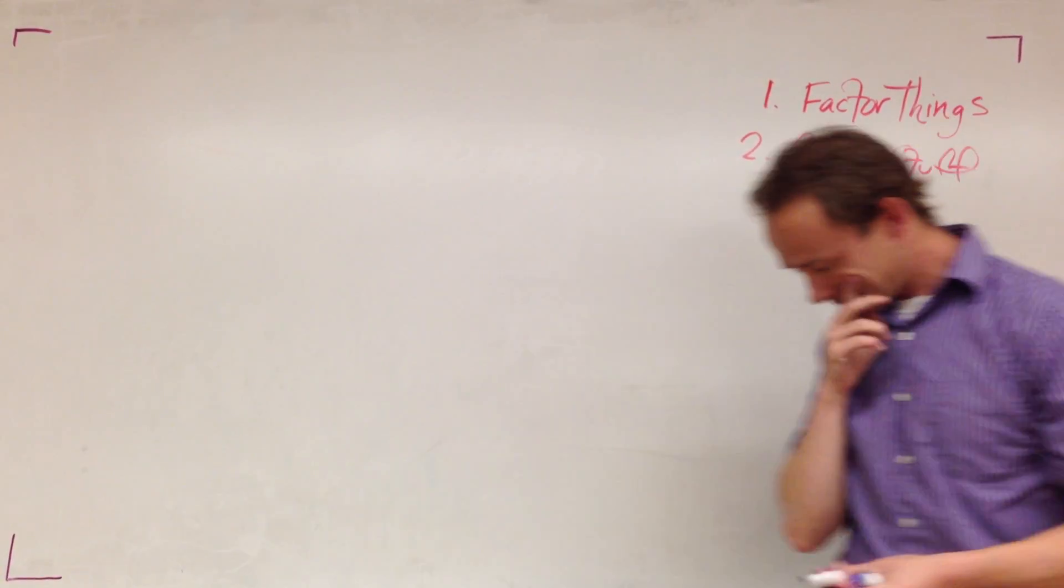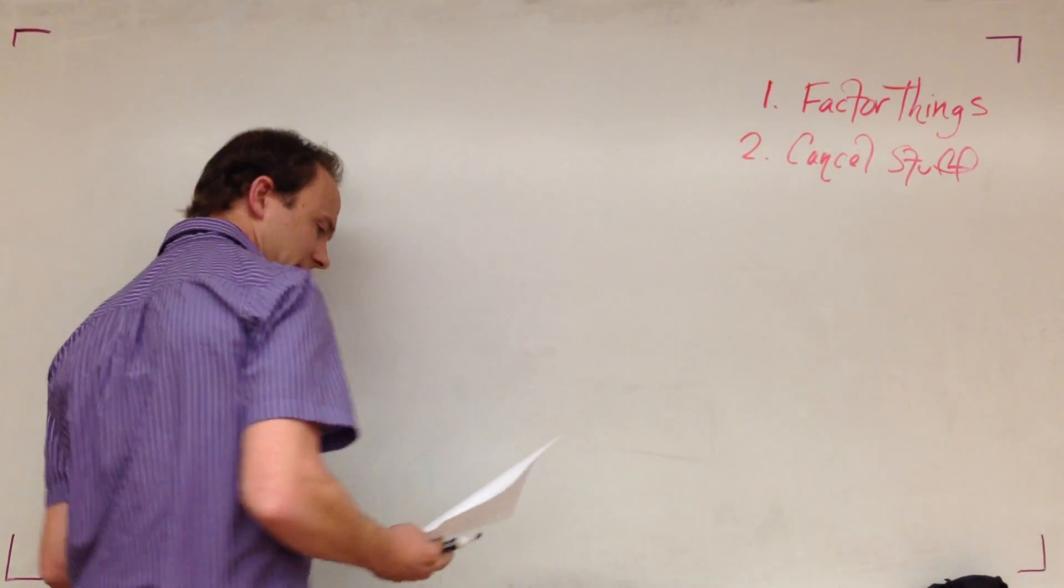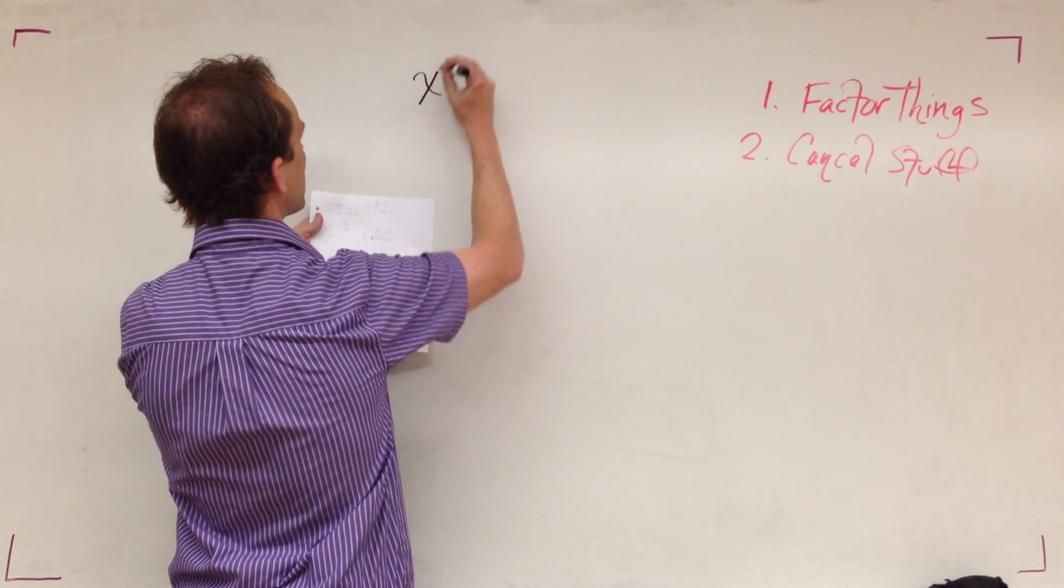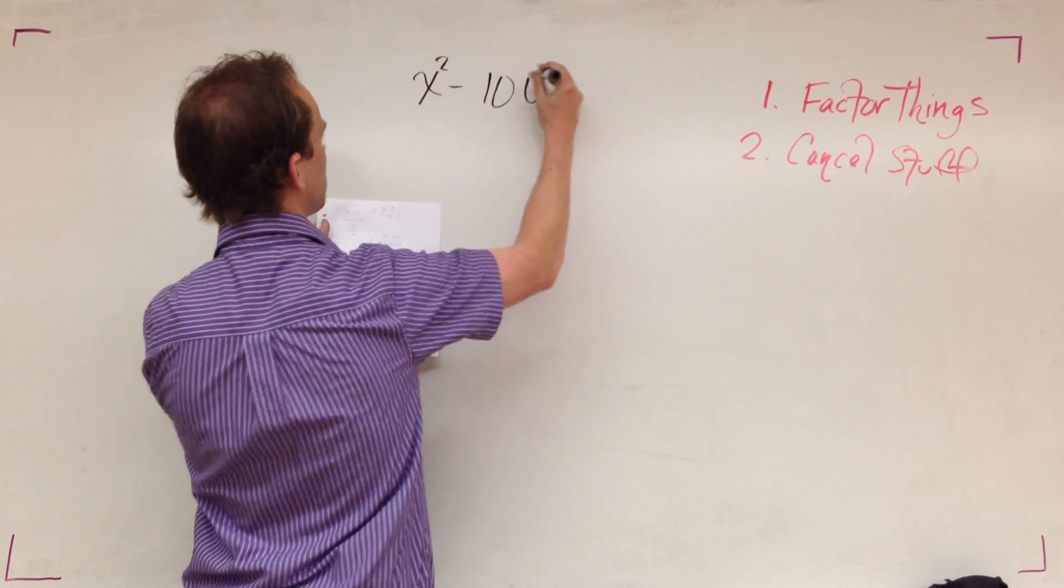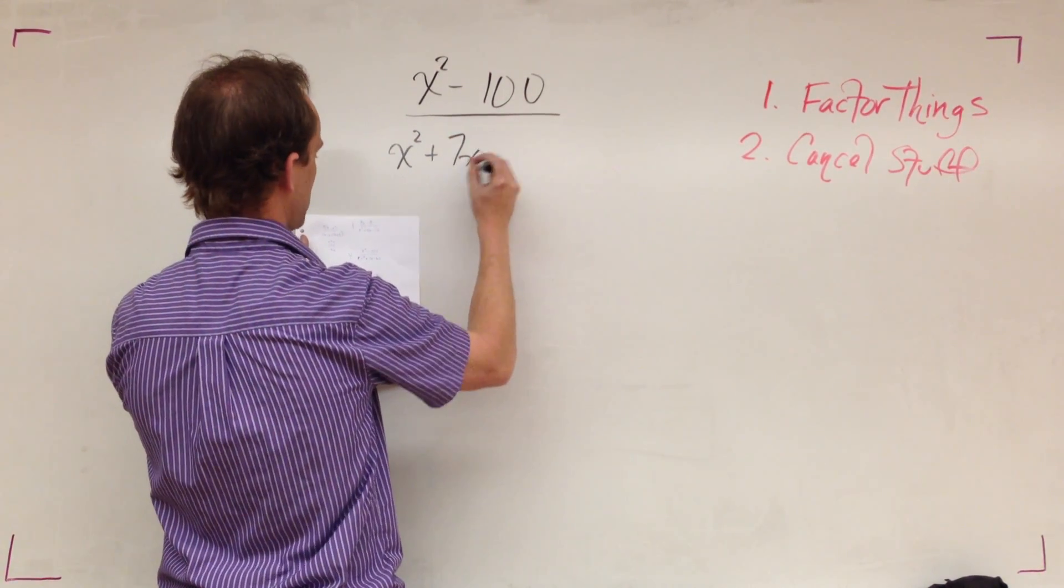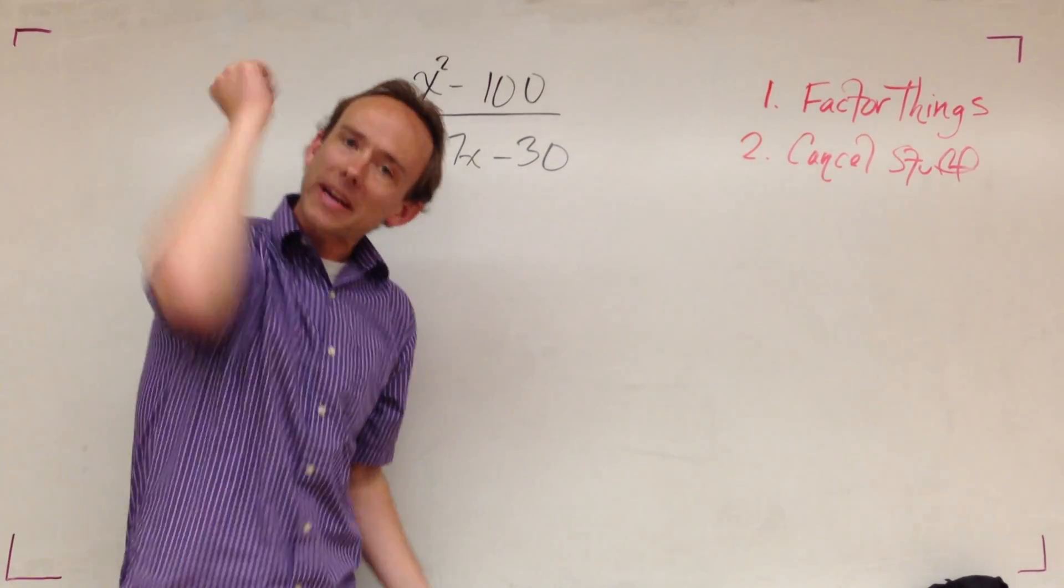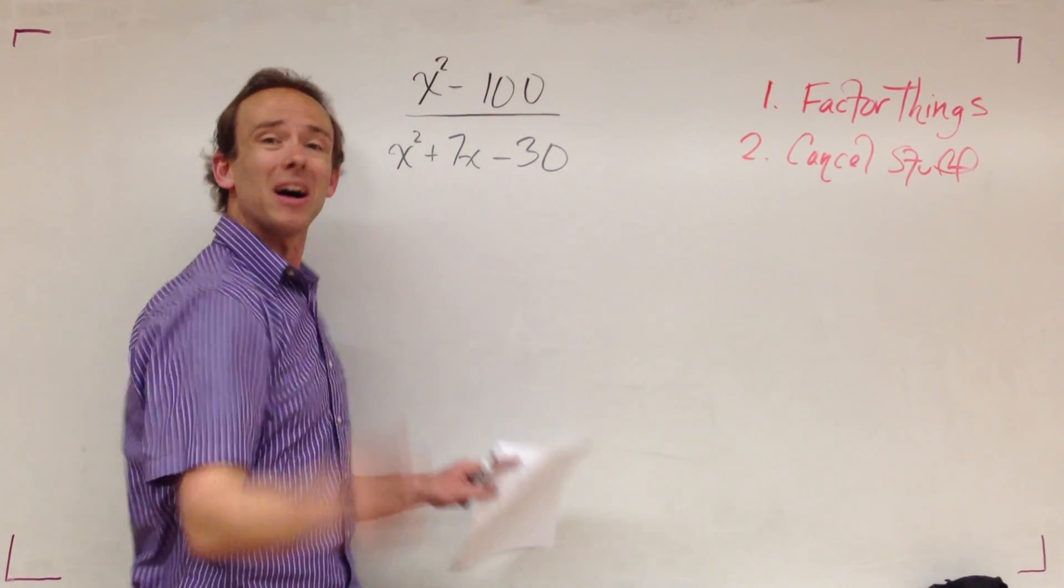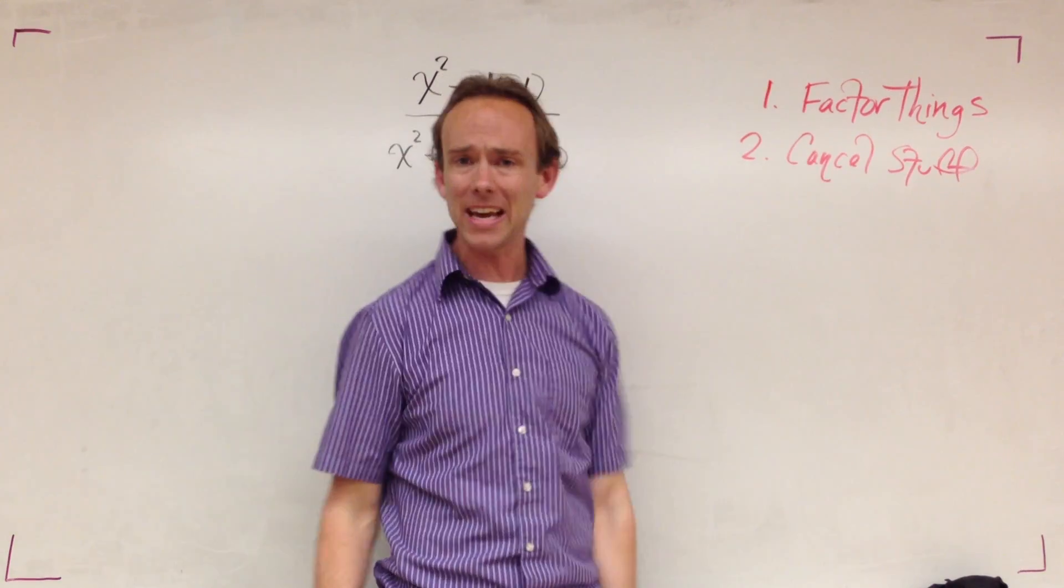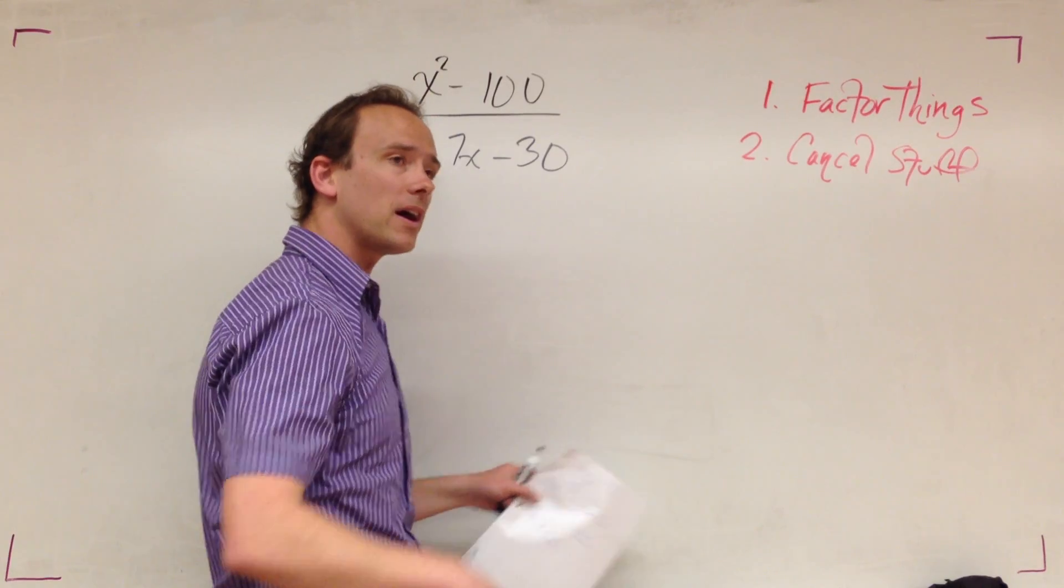I'm intentionally not looking for excluded values, maybe we'll do that some other time. Right now I'm interested in just the simplification process. What do we got here? We got x squared minus 100 over x squared plus 7x minus 30. I urge you, I recommend to you that you pause this video and try this problem on your own. Do the two steps: factor the things then cancel the stuff.